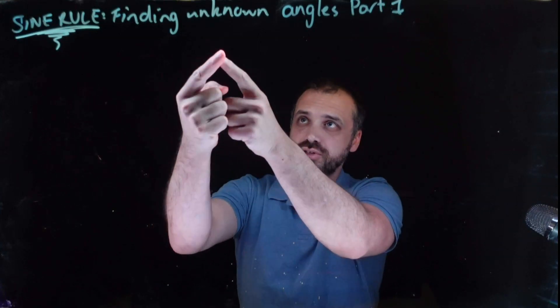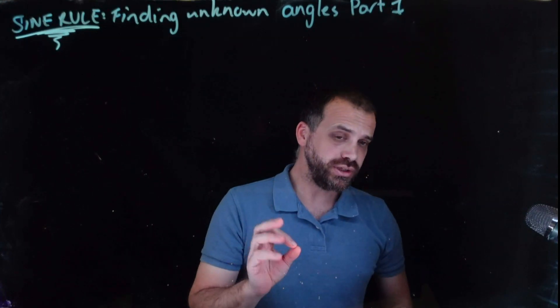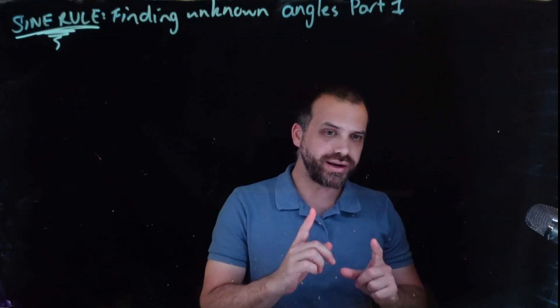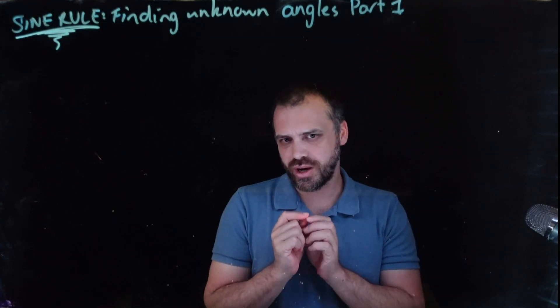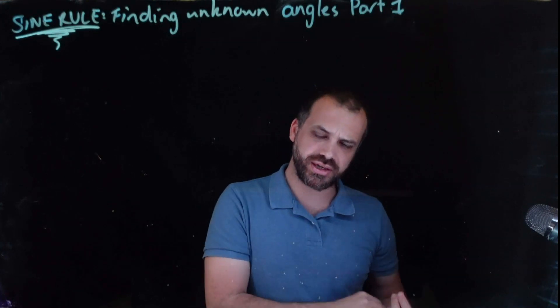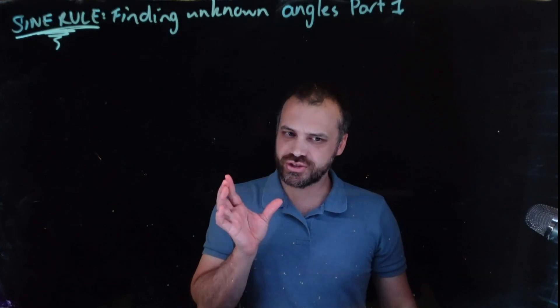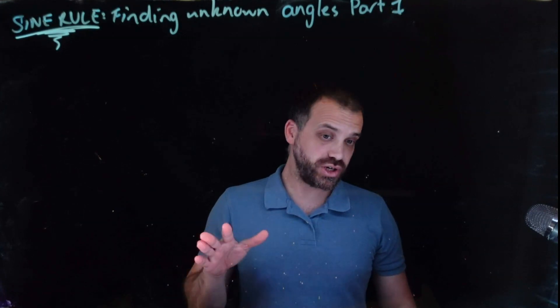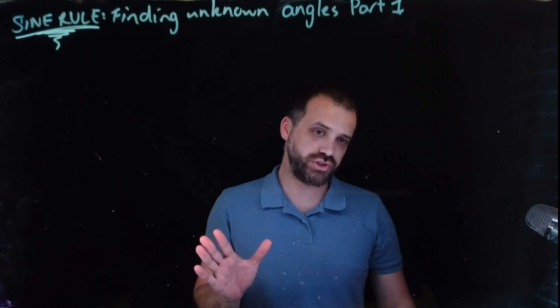Alright, so this is sine rule. This time we're going to be finding an unknown angle. Notice that it says part one up here. The reason it says part one is because finding unknown angles is not as easy as you would think. It's a very strange thing happens. But in this video, nothing strange is going to happen. It's going to be really straightforward.